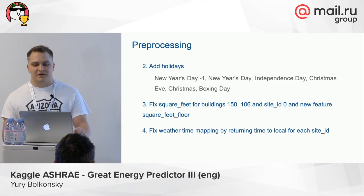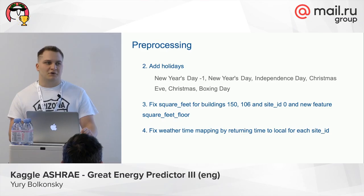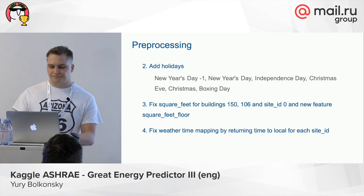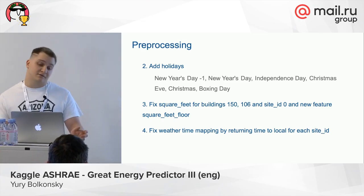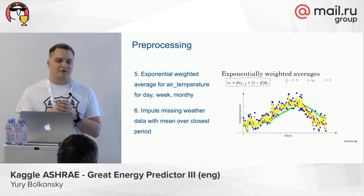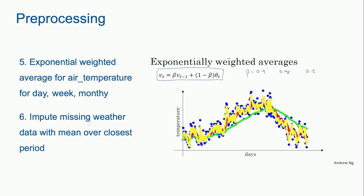We also fixed weather time mapping by converting time to local time for each site ID. Because the timestamps were in local time but needed to be connected to weather data which was uniform across all data. Some competitors didn't do this, which gave them very tricky data and a worse score as a result. As a fifth step of pre-processing, we added exponential weighted average for air temperature for day, week, and month, which gives a more stable graph for weather over days. We also imputed missing weather data with the nearest closed periods — if some weather data was missing, we imputed it with the same period before or after the interval.